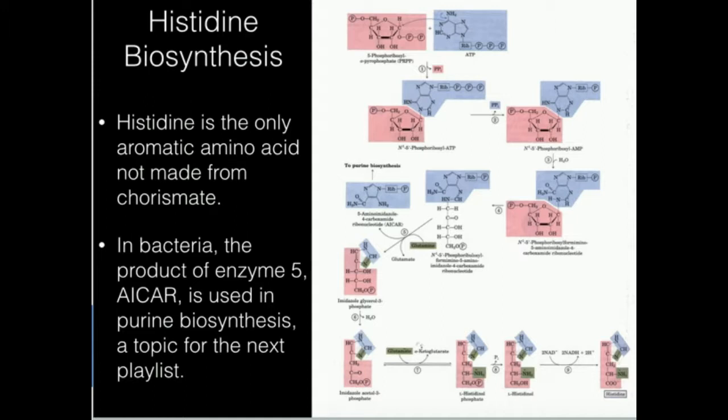So this is not made from chorismate. You can see up here it's made from ATP and PRPP. So if you want to know more about PRPP and what it is, suffice to say it's a ribose phosphate donor, but we talk about it in great detail at the beginning of the nucleotide metabolism playlist.